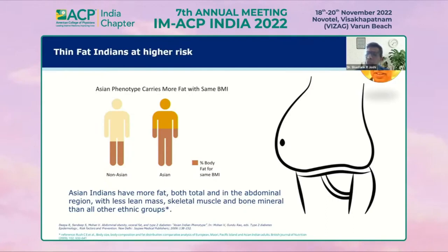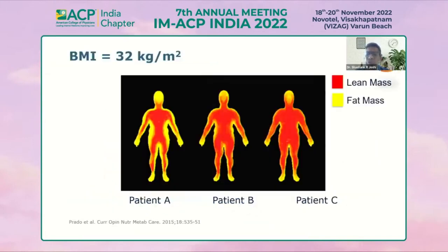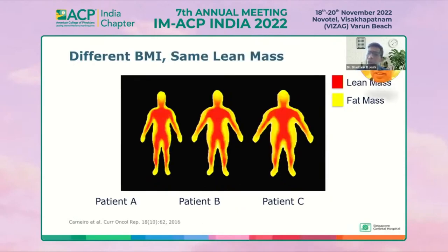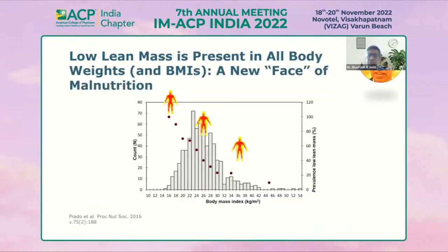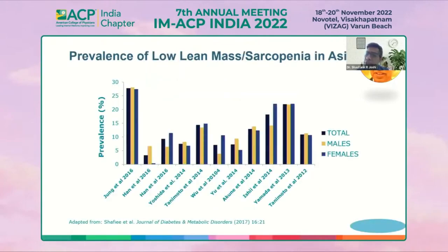There is an explosion of type 2 diabetes and non-communicable diseases in South Asia. For the same BMI of 32, Asian Indians have more total and abnormal fat distribution, with less lean mass, less skeletal muscle mass, and lower bone mineral density compared to other ethnic groups. We are seeing a new phase of malnutrition today — low lean mass present across all body weights and BMIs — and this is the new modern phase of Asian malnutrition called sarcopenia.